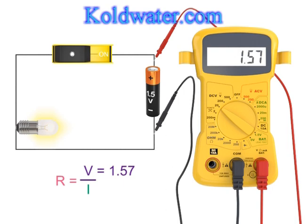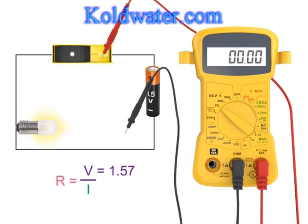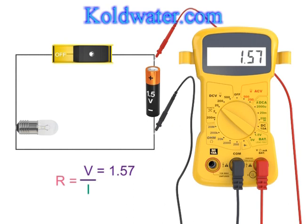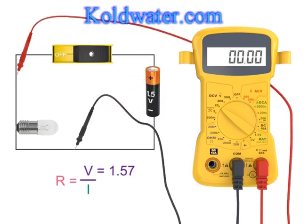Now, let's measure the voltage across the light bulb. As expected, with current flowing, it too is 1.57 volts. If we put the switch in the off or open position, we will still see the voltage across the battery. However, the voltage across the bulb will be 0. This is expected, as the light bulb, which is the load in this circuit, only has a voltage across it if a current is present.